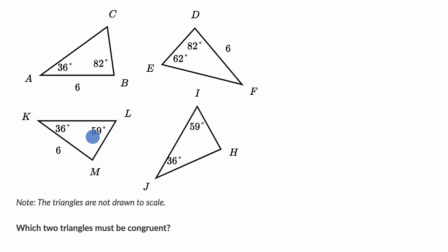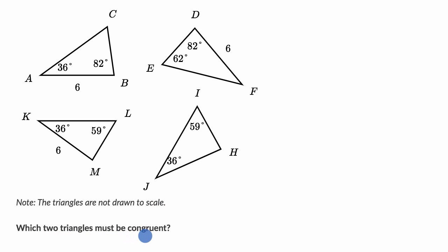We have four triangles depicted here, and they've told us that the triangles are not drawn to scale. We are asked which two triangles must be congruent. Pause this video and see if you can work this out on your own before we work through this together.